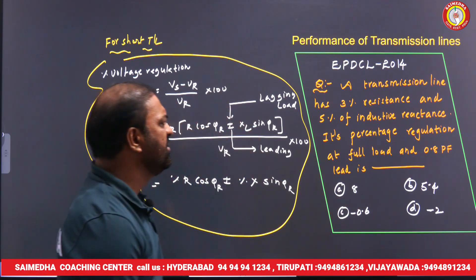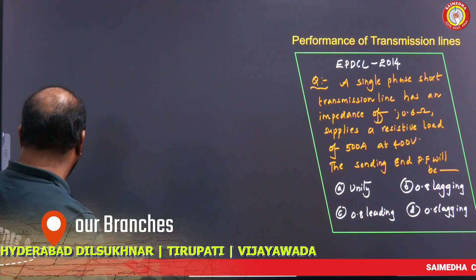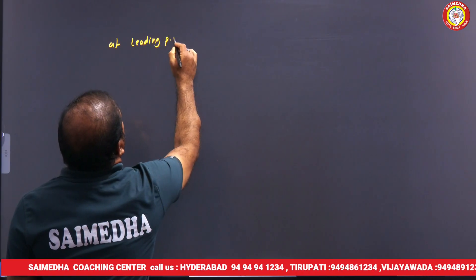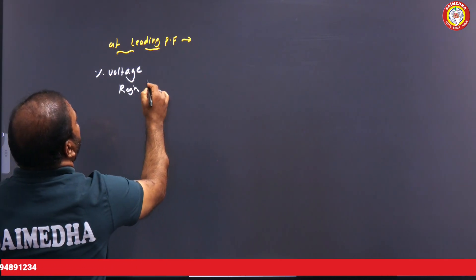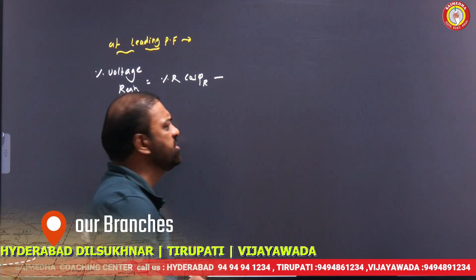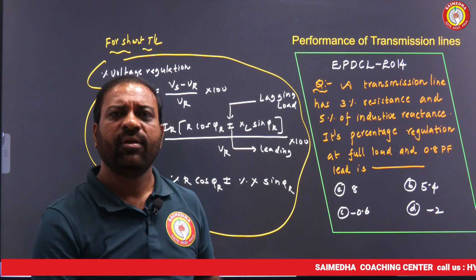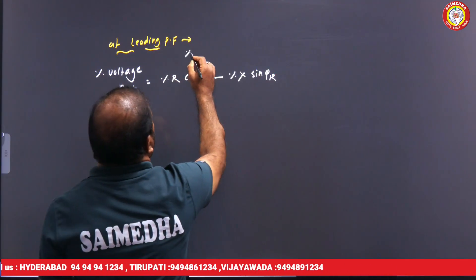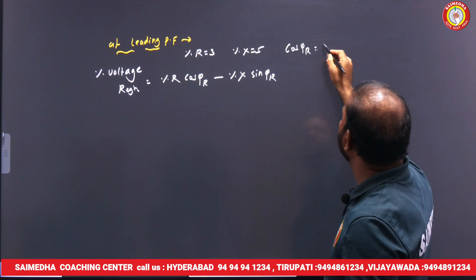Since the power factor is 0.8 leading, we use the minus sign. The values are: %R = 3, %X = 5, cosφr = 0.8. Since cosφr = 4/5, using a right triangle, sinφr = √(1 − 16/25) = √(9/25) = 3/5 = 0.6.